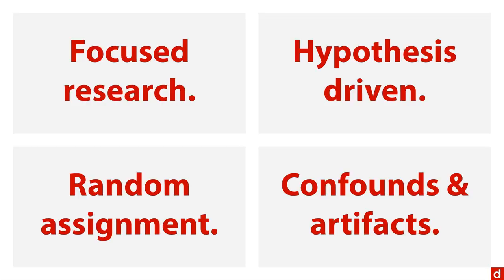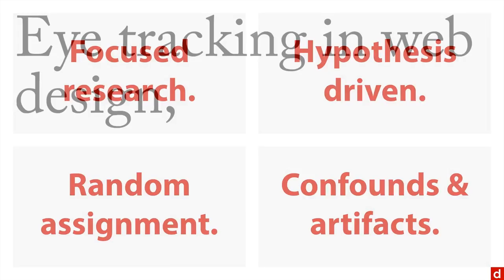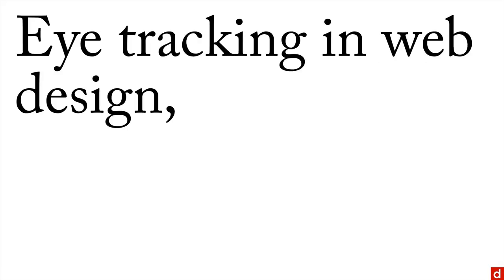Now, some places where you're likely to see laboratory experiments in this version are, for instance, eye tracking in web design. That's where you have to bring people in front of a computer and you stick a thing there that sees where they're looking. That's how we know, for instance, that people don't really look at ads on the side of web pages.